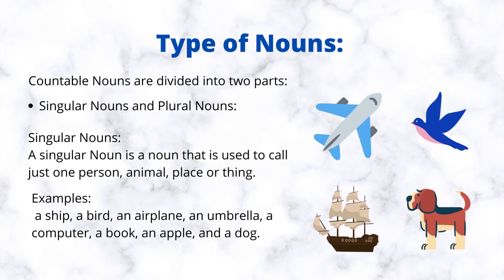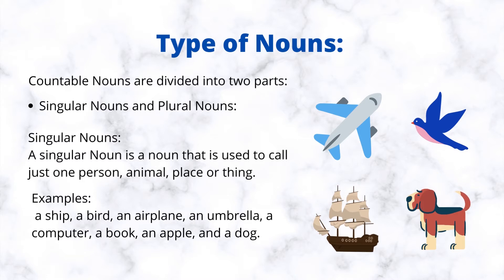Countable nouns are divided into two parts: singular nouns and plural nouns. A singular noun is a noun that is used to call just one person, animal, place, or thing. Examples: a ship, a bird, an airplane, an umbrella, a computer, a book, an apple, and a dog.